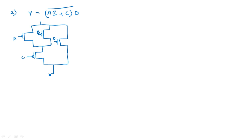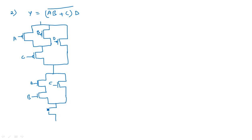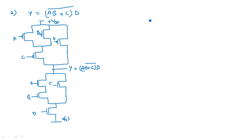Coming to the NMOS realization: A and B are in series. For this realization, C must be in parallel. D must be in series connecting to VSS. The output is Y equal to AB plus C into D whole bar. If the bar is not there, then we should use a NOT gate at the output, which is also a CMOS inverter.